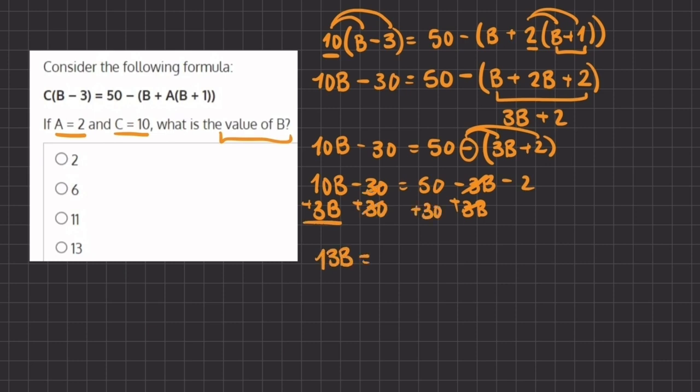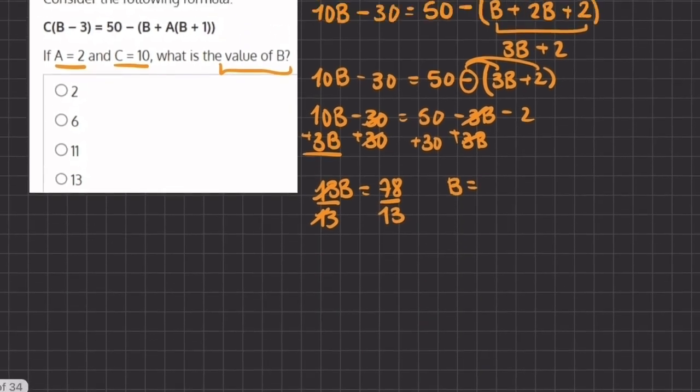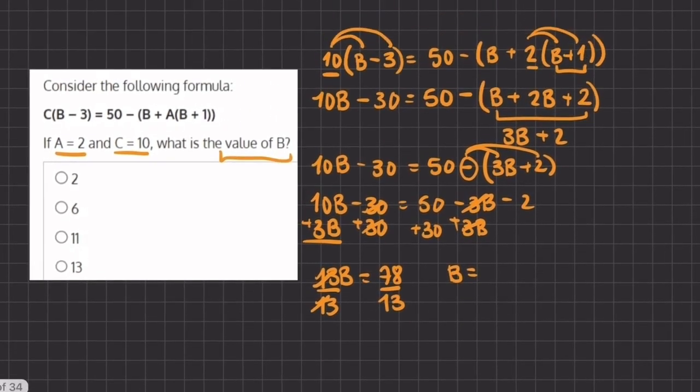So now we have 50 plus 30 minus 2, which gives us 78, and now in order to find the value of b, we will isolate this b by dividing by 13 on both sides, and now we get b to equal 78 divided by 13, which gives us 6.